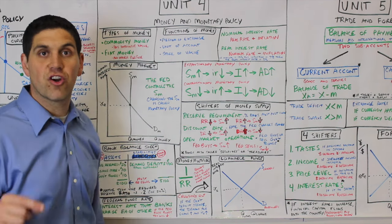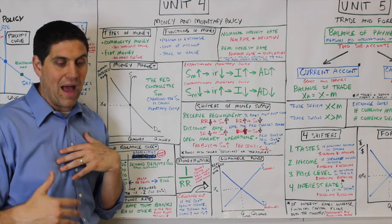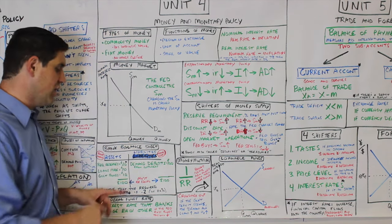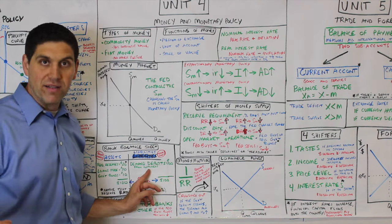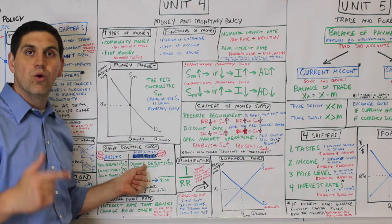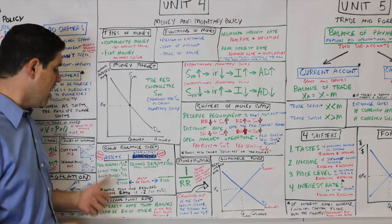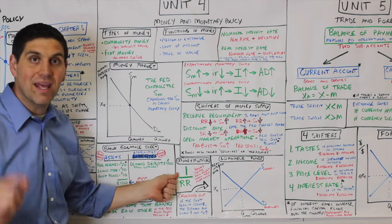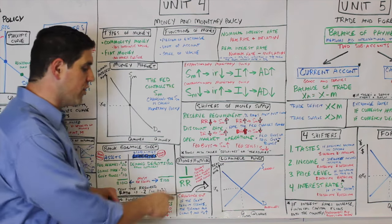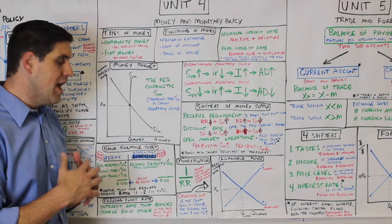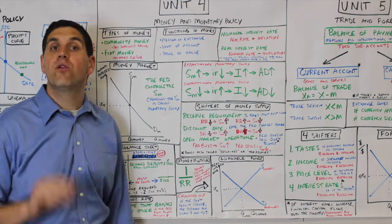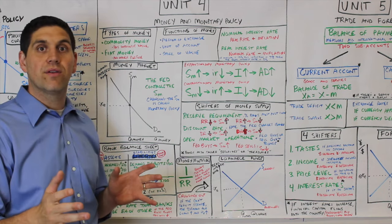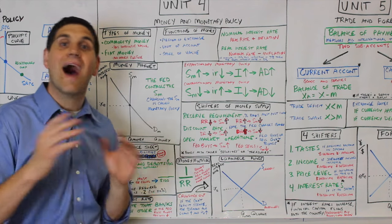Banks create money through fractional reserve banking. When money goes into a bank as deposits, the bank holds a portion by law and loans the rest out — and when they loan it out, they're actually creating money. There's a concept called the bank balance sheet showing liabilities and assets. Liabilities include demand deposits — money deposited into banks is a liability to the bank. Assets are what they do with the money: required reserves are what they hold, then they can loan money out or hold excess reserves. To figure out how much money banks create, you use the money multiplier — 1 over the reserve requirement. However, when the Fed buys bonds, that is all brand new money, so the entire amount gets multiplied.